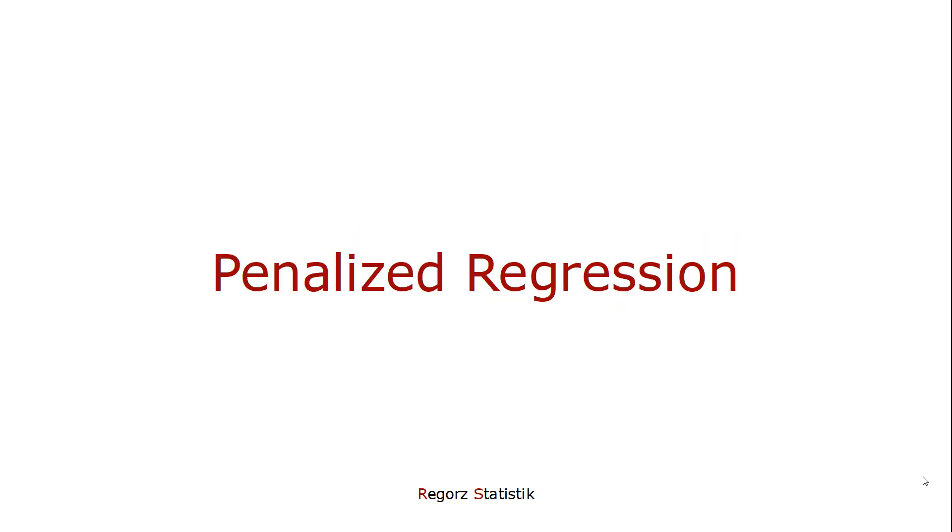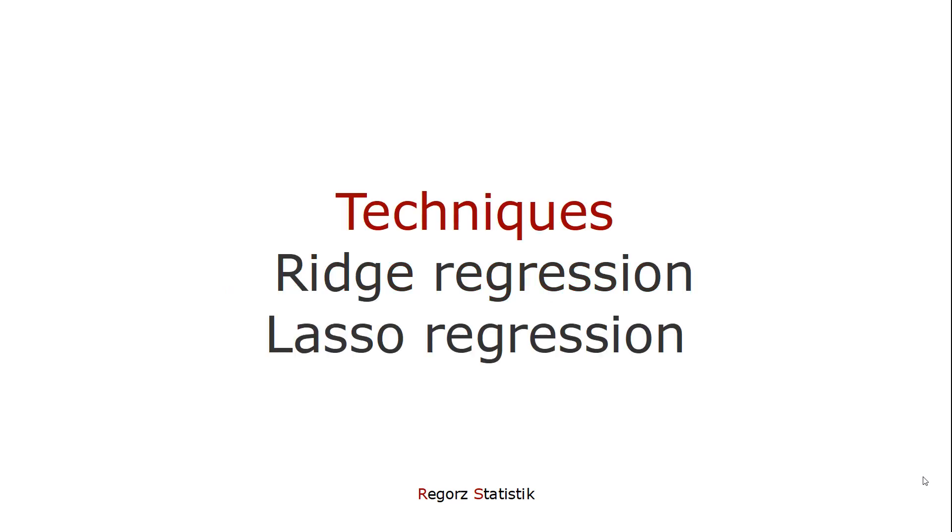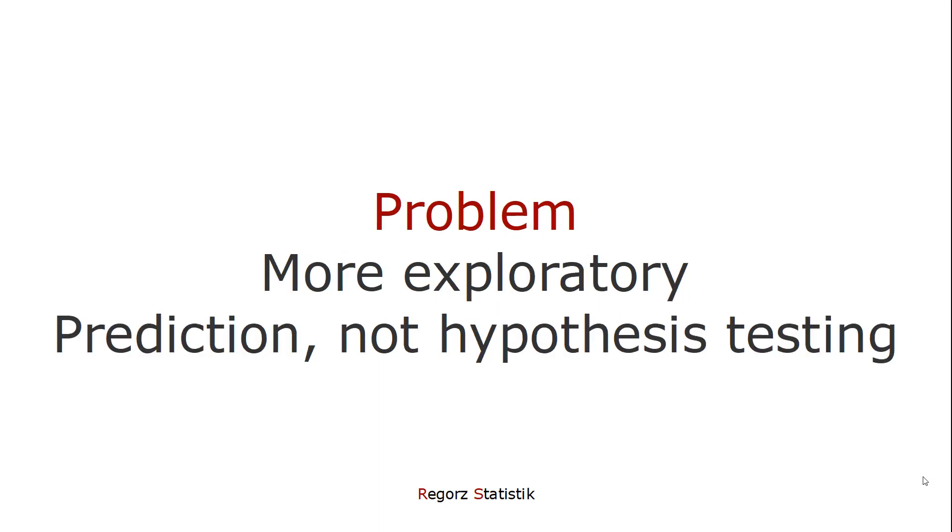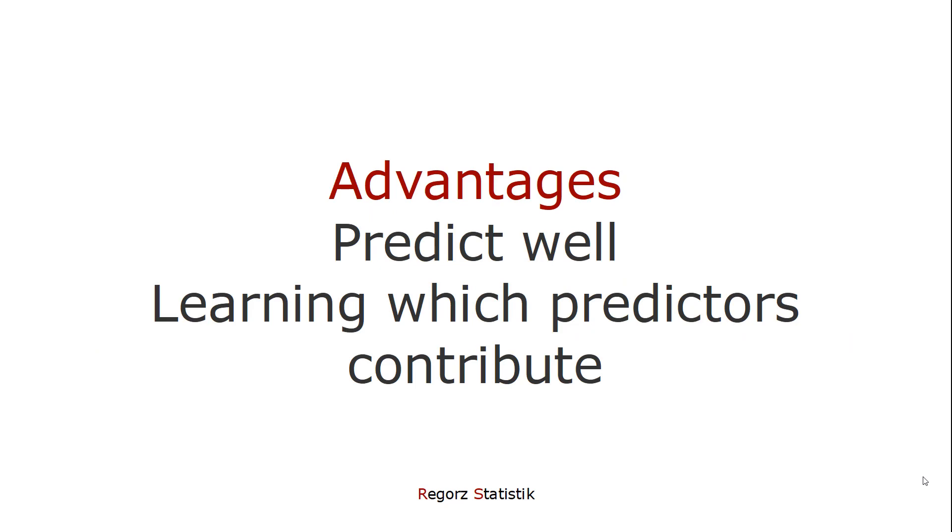Some more sophisticated techniques for dealing with multicollinearity are called penalized regression. One technique is ridge regression. One related technique is lasso regression. I won't go into those in detail, but I've put some sources for that in the description. Journal articles and links to two YouTube tutorials about that, which I like. However, those techniques are more exploratory. You can use them for prediction, but not really for hypothesis testing. Advantages are they predict well, and you could use them to learn which predictors really contribute to the explanation of the variance of the dependent variable. But for a specific hypothesis, I think those techniques aren't really a viable option.